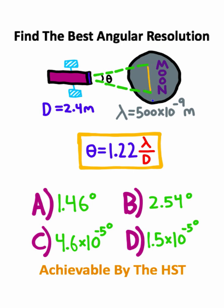So to solve this problem, we can use the angular resolution equation provided below. We have that our angle theta is equal to 1.22 times the wavelength of light divided by diameter. We have the wavelength of light, and we also have the diameter for the lens on the Hubble Space Telescope.